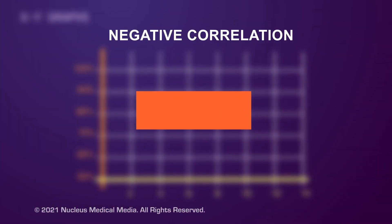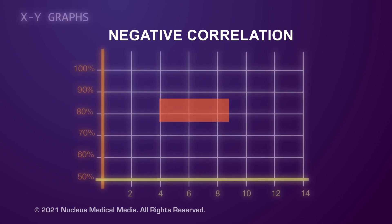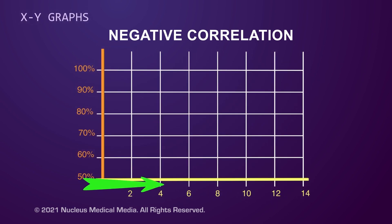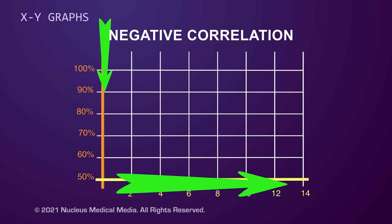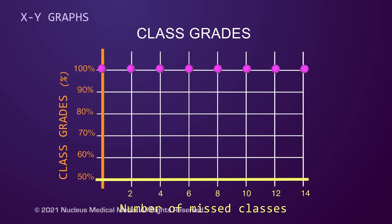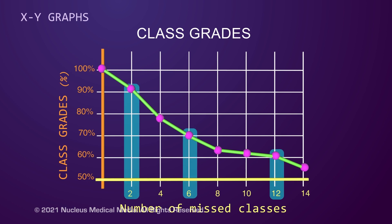So what is a negative correlation? In a negative correlation, one variable goes up while the other goes down. Here we're showing how class grades might go down as the number of missed classes goes up. So a line connecting the data points will show a downward trend. Remember, variables are negatively correlated when one value is increasing while the other value is decreasing.